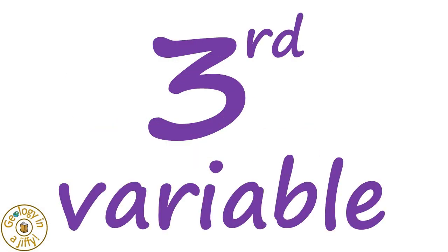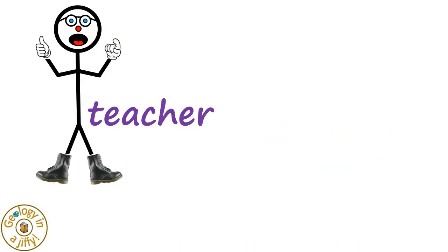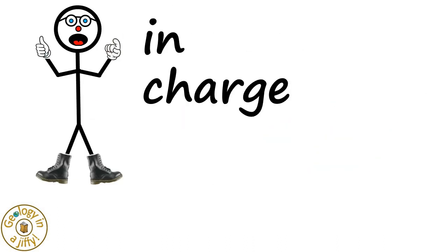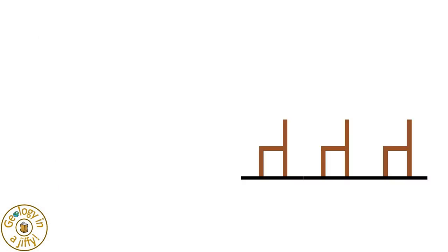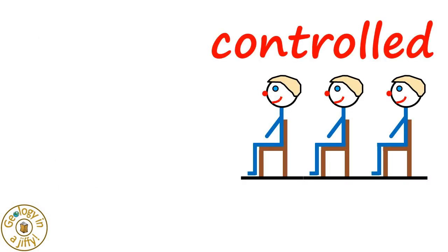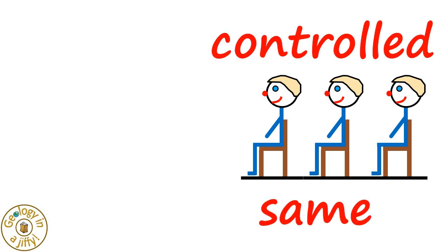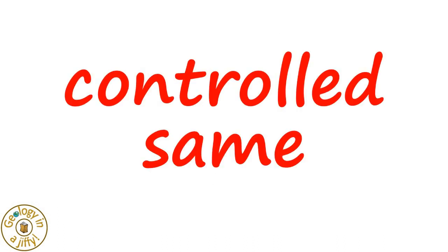The third variable to consider, as shown in our classroom model, is that the teacher is in charge of the room and the students, so they are being controlled. The teacher ensures that they all do the same, modelling our third variable: that the controlled variables are those that we keep the same.